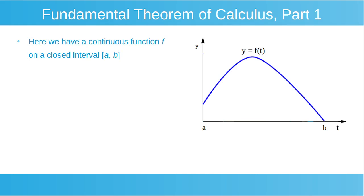We have a continuous function f on a closed interval from a to b. To explain the term continuous function, we can think of it intuitively as a function which we could draw with an unbroken line of our pen on a page, without ever lifting our pen from the page. When we refer to the closed interval from a to b, we're referring to all of the points between a and b, as well as the point a and the point b.